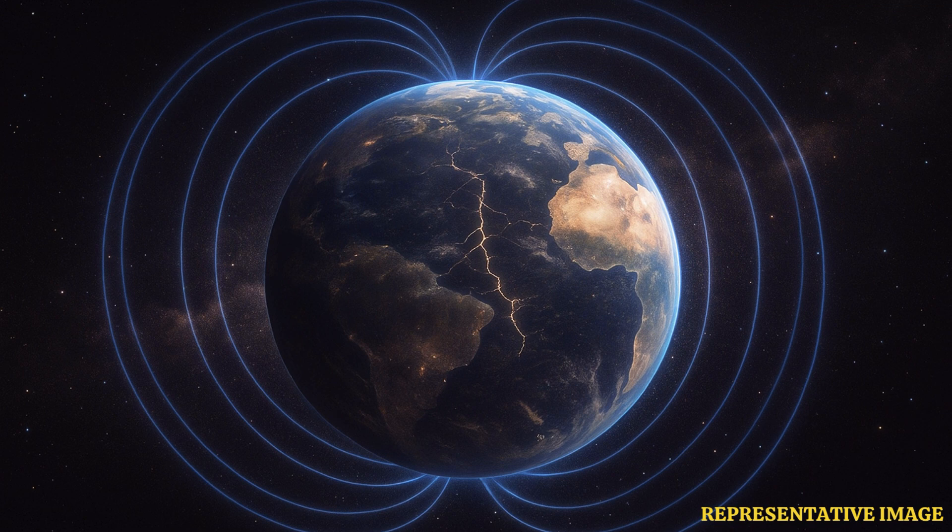A fluctuation in Earth's magnetic field is not uncommon. As the movement of the molten iron 2896 kilometers below the surface fluctuates, the magnetic field witnesses changes too. According to NASA, when this phenomenon is coupled with the tilt of the planet's magnetic axis, an anomaly is created, which is known as the SAA.